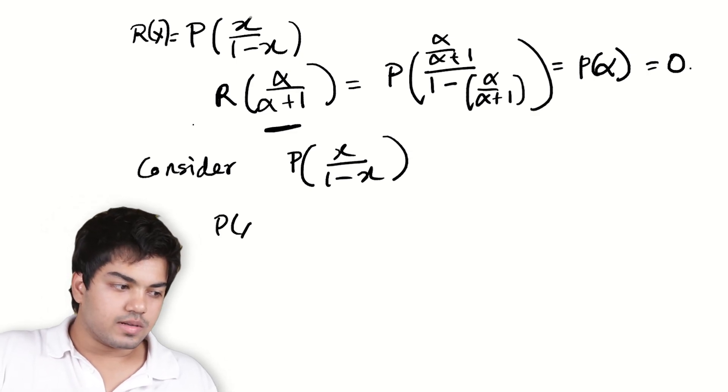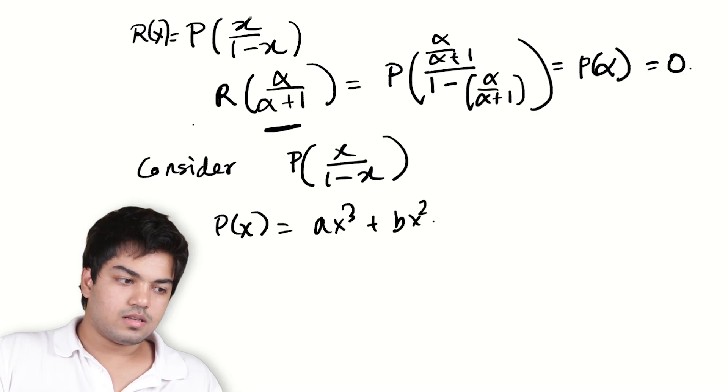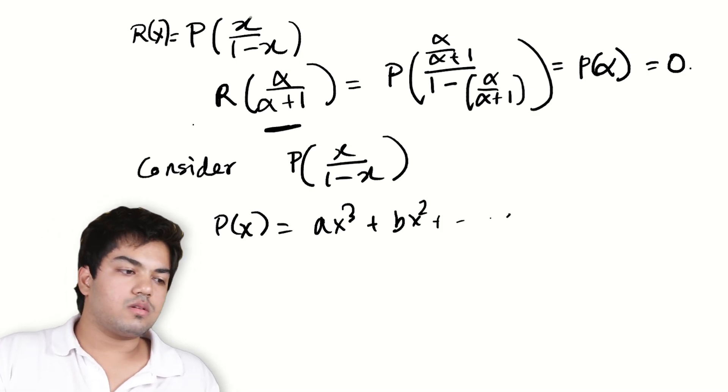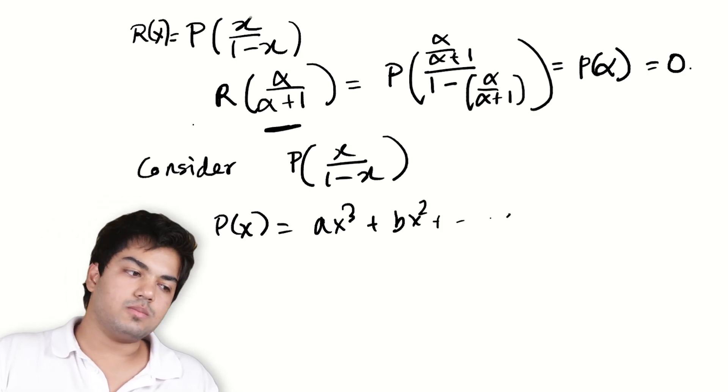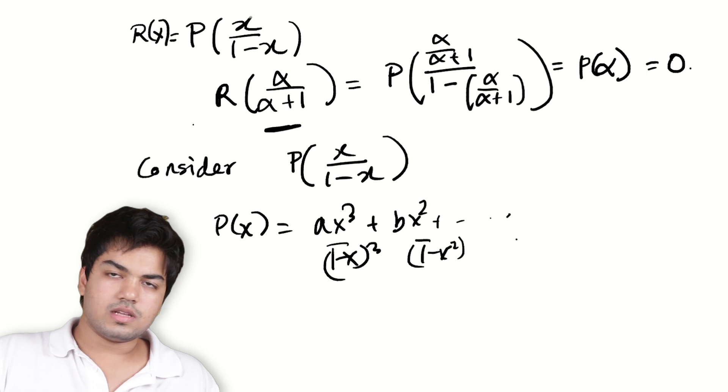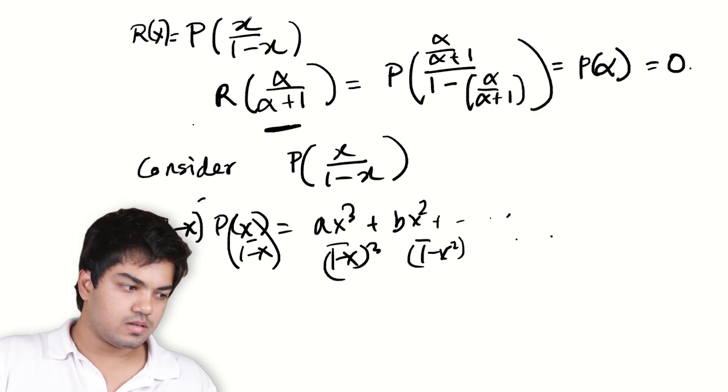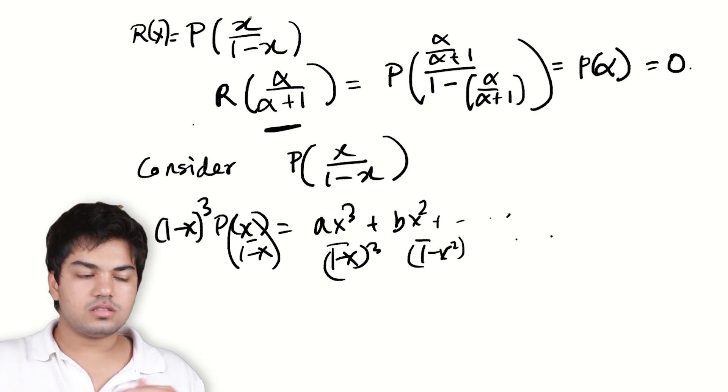This P(x) is a cubic, right? You'll do ax³ + bx², yada yada. Right? It's a cubic. What happens when I plug in x/(1-x) in this? I just have these (1-x)³, (1-x)² terms lying around. Right? How do I make this a polynomial? Simple. I just multiply it out. I just consider this (1-x)³. I just multiply it.